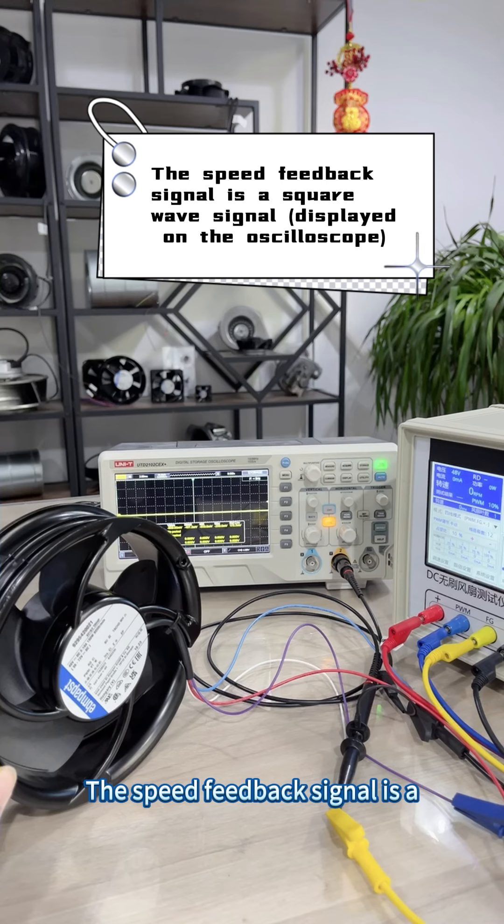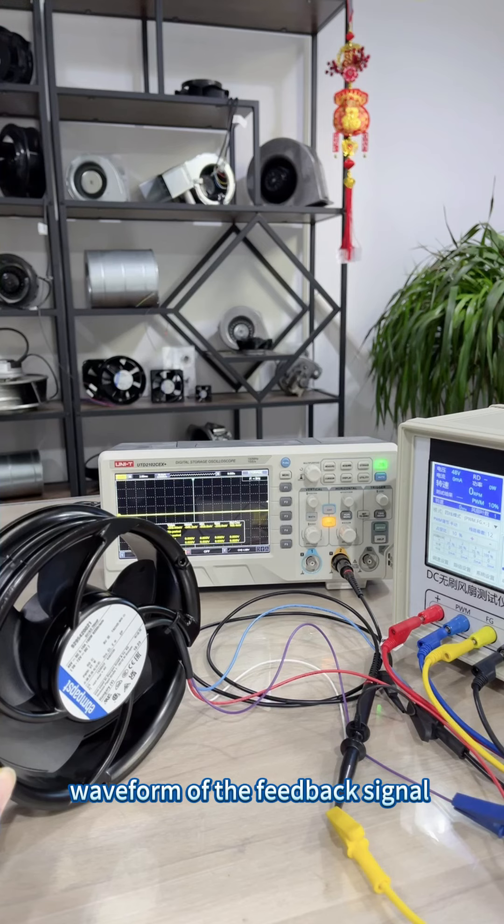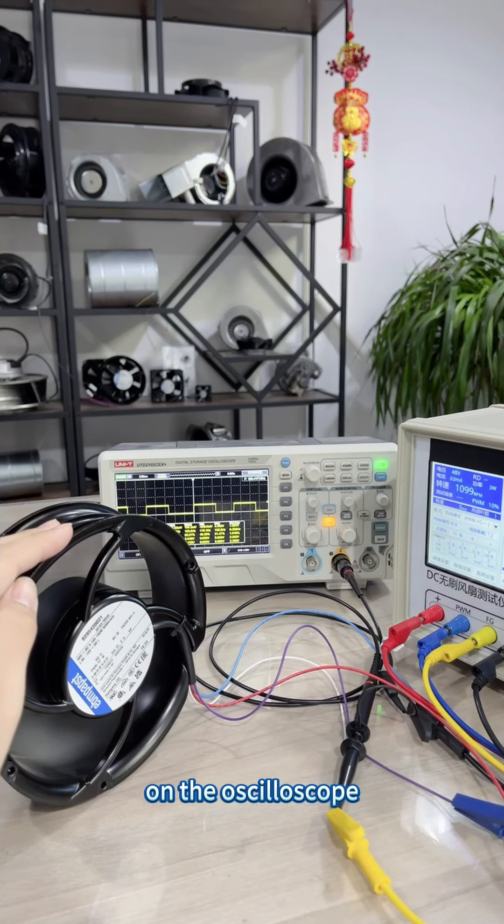The speed feedback signal is a square wave signal displayed on an oscilloscope. Now, we control the fan speed by manually adjusting the duty cycle. At the same time, we observe the waveform of the feedback signal on the oscilloscope.